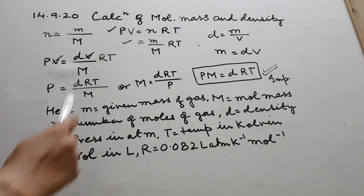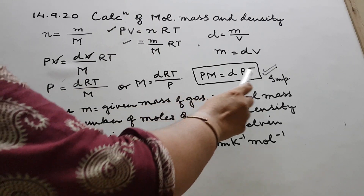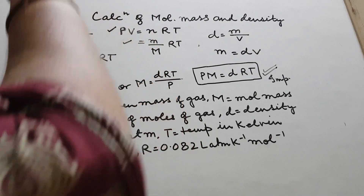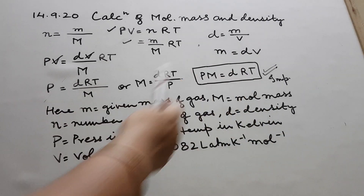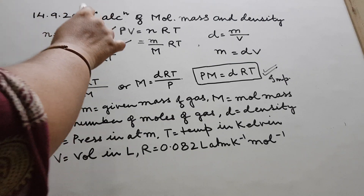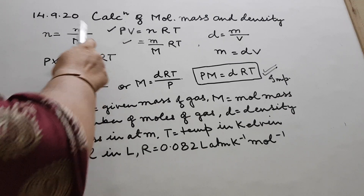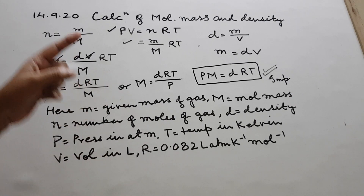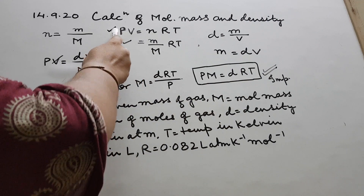So small m is given mass and capital M is molecular mass — are we clear? The ideal gas equation PV = nRT gives us PM = dRT, where P is pressure in atmospheres, M is molecular mass, D is density, R is the gas constant, and T is temperature in Kelvin. Note: in the previous chapter on mole concept, small m was molality and capital M was molarity — here it is not that. No confusions: small m is given mass and capital M is molecular mass. With the help of PM = dRT, you can solve many problems.